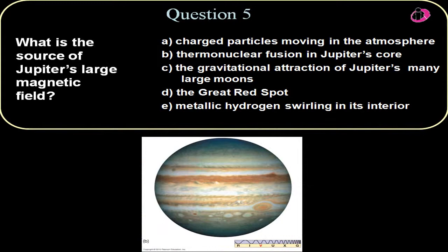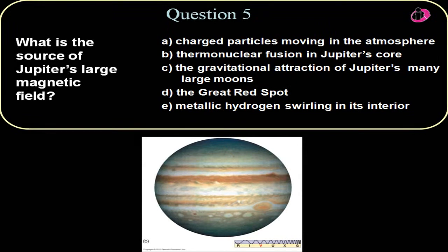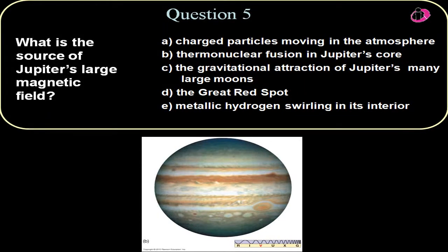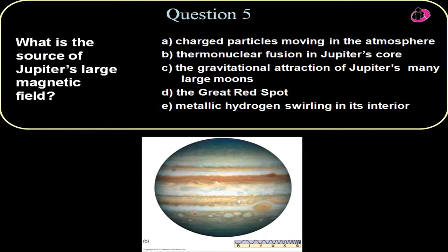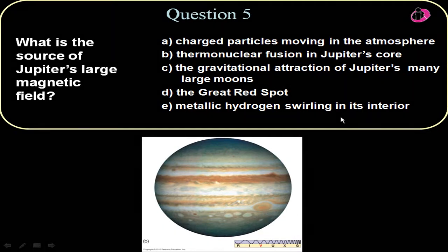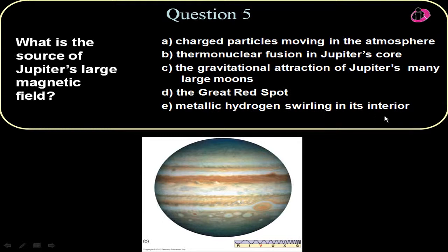Question five. What is the source of Jupiter's large magnetic field? Well, probably the source of all the Jovian large magnetic fields is the fact that in their interior they have hydrogen in its different forms, but hydrogen being actually a metal. We never think of hydrogen as a metal because we always see it in its gaseous form. But if it's under pressure and under a higher temperature, it can actually be in its solid form or liquid form as well as a liquid metal. And so we have metallic hydrogen swirling in the interior of Jupiter causing its magnetic field.